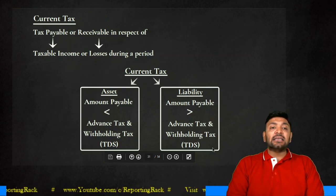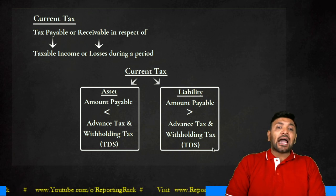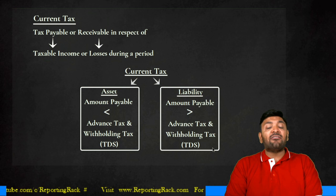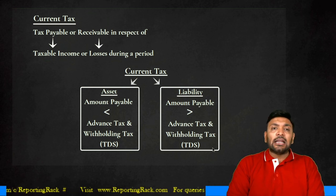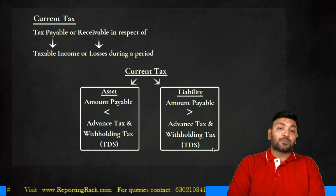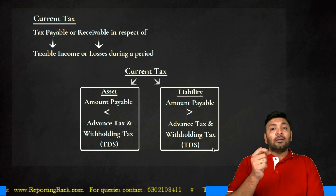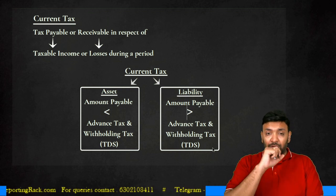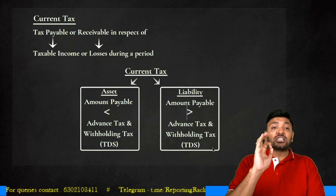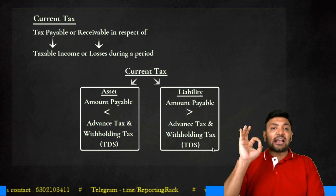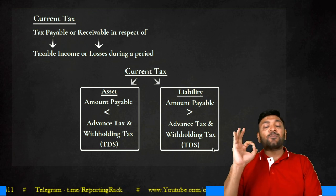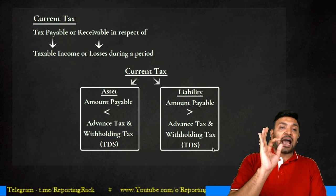What is current tax? Current tax is the tax payable or receivable in respect of taxable income or tax losses during a particular reporting period. Current tax is derived as per the prevailing tax laws. In India, the prevailing tax law is the Income Tax Act 1961. According to it, any tax payable or receivable in respect of taxable income or tax losses during a period is called current tax. Current tax is always measured as per prevailing tax laws.